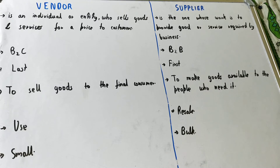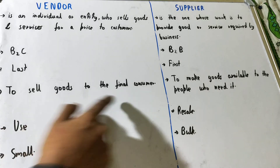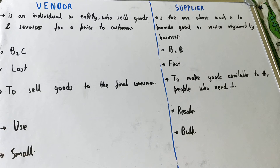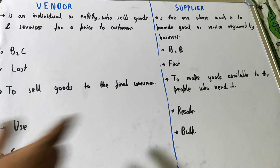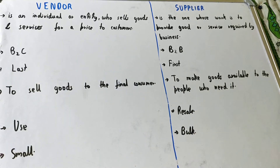If we talk about the objective, the objective of the vendor is to sell goods to the final customer. The objective of the supplier is to make goods available to the businesses or the people who need them.